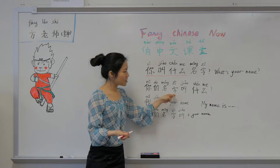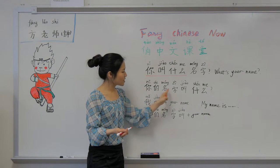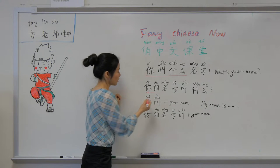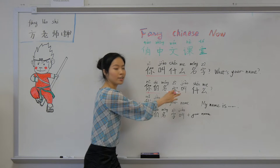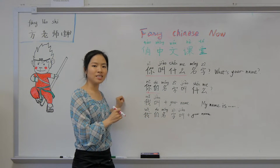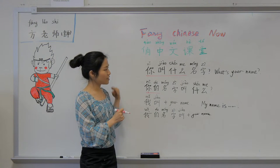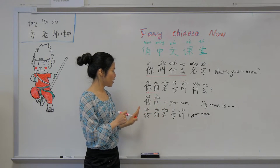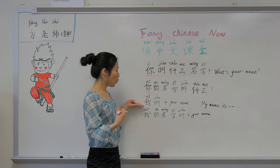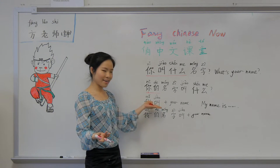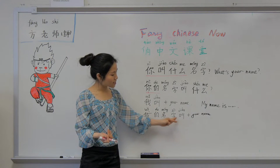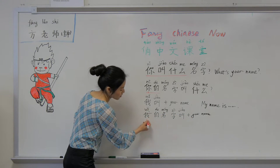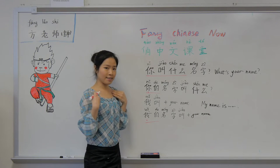Another way to ask 'what's your name?' is 你的名字叫什么. 你 means 'you', 你的 means 'your', 你的名字 means 'your name', 叫什么 means 'to be called what'. So 你的名字叫什么 means 'your name, to be called what?'